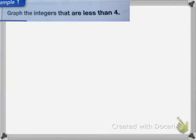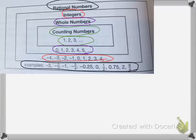If I want to graph the integers that are less than 4, we go back and look. Integers are whole numbers, positive and negative.